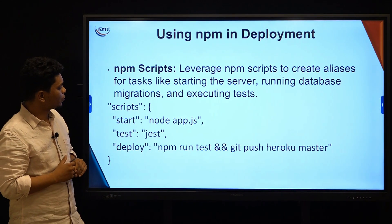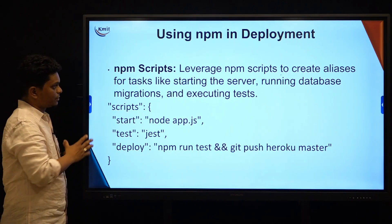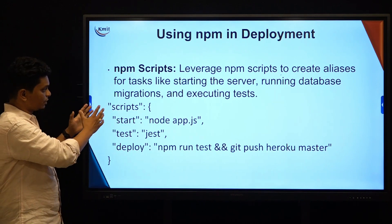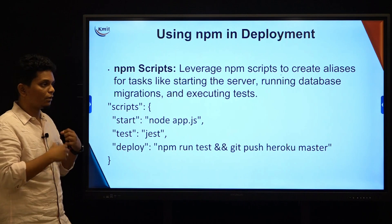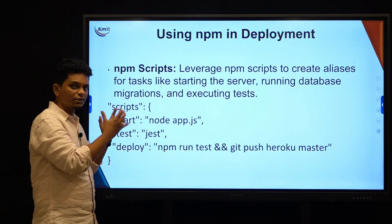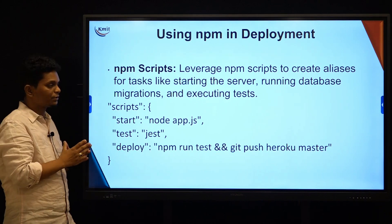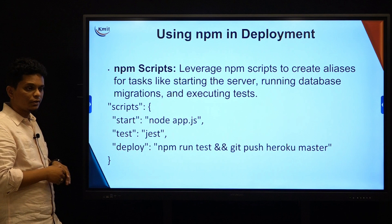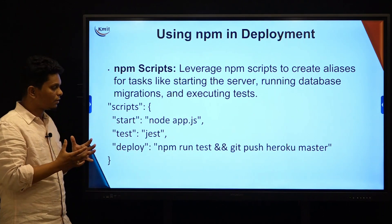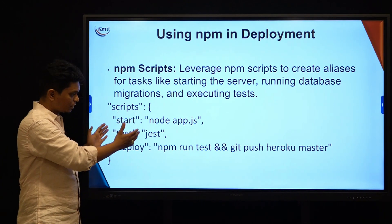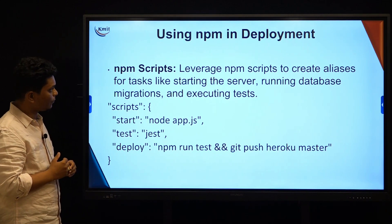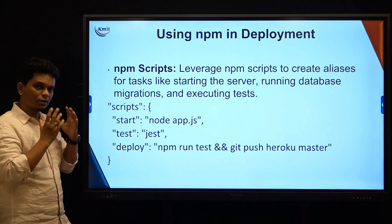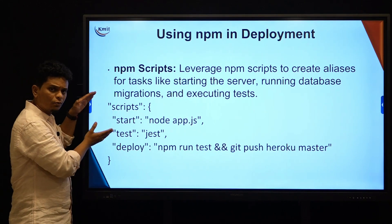Using npm in deployment — npm scripts. npm scripts create aliases for tasks like starting the server, running database migrations, and executing tests. npm also deals with creating scripts that make it easy to run databases and execute tests. As you can see here, this is a simple script written in JSON format. JSON format, as discussed earlier, is a key-value architecture-based script. This is a basic npm script used to deploy a specific application.